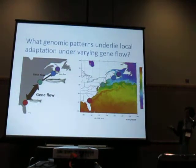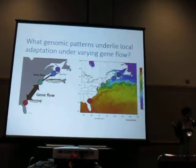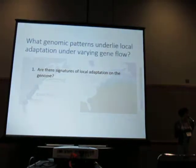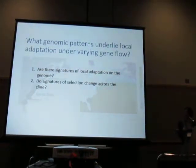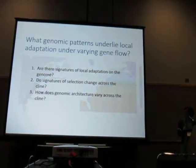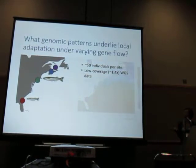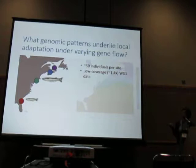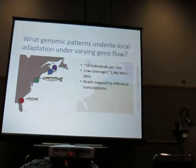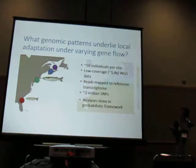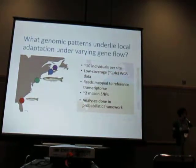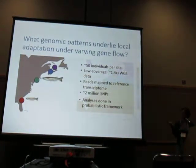We sampled silversides from four populations: Georgia, shown in red; New York in green; Gulf of Maine in blue; and Gulf of St. Lawrence in purple. We specifically asked: are there signatures of local adaptation visible on the genome? Do signatures of selection change across the cline? And how does genomic architecture vary across the cline? To address these questions, we sampled about 50 individuals per site and used low-coverage whole genome sequencing at a final depth of about 1.4x. We don't have a reference genome for silversides, so we mapped our reads to a reference transcriptome, obtaining about 2 million SNPs. Because these were low-coverage data, all analyses were done in a probabilistic framework using genotype likelihoods.